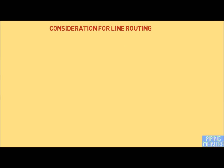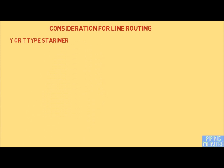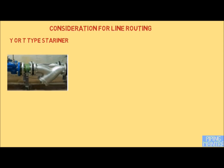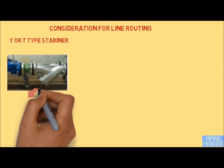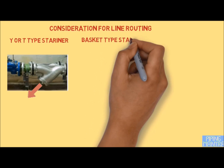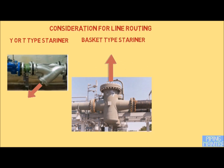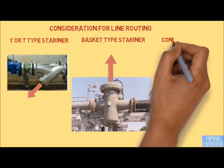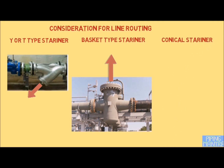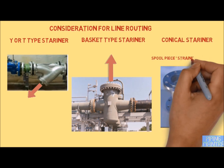Piping should be arranged to provide sufficient clearance around equipment such as pumps, turbines, compressors, agitators, and heat exchangers for maintenance purposes. For strainers, adequate clearance is also required: for a Y-type strainer, the strainer screen is removed from the bottom so clearance is needed below; for a basket-type strainer, the screen is removed from the top so sufficient space is needed at the top. For a conical strainer, a spool piece with length at least equal to the conical strainer length is required for installation in the pipeline.